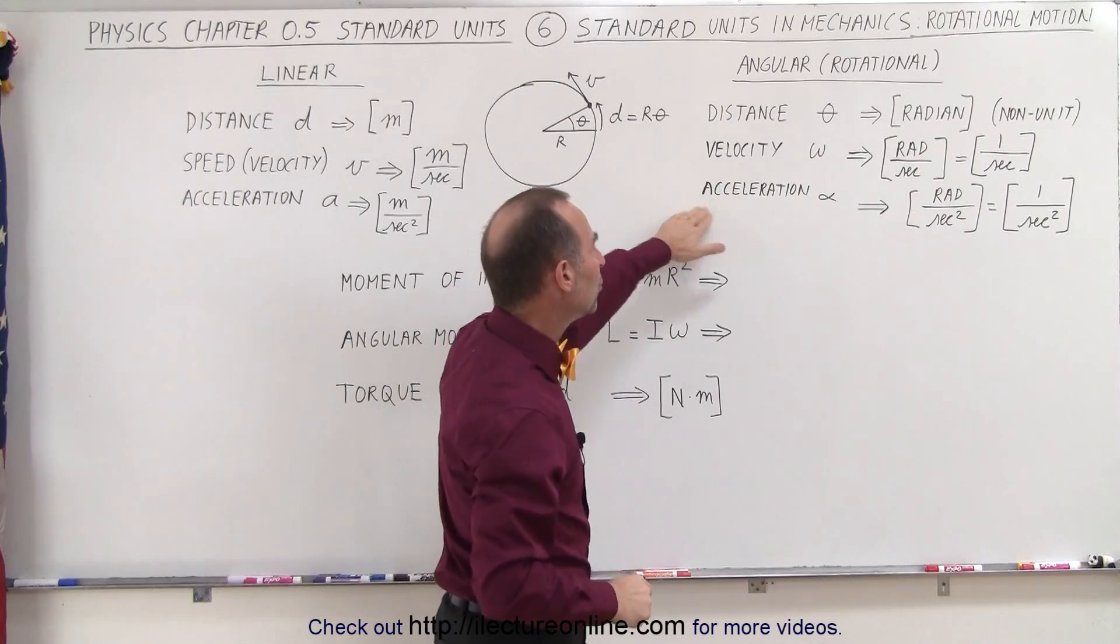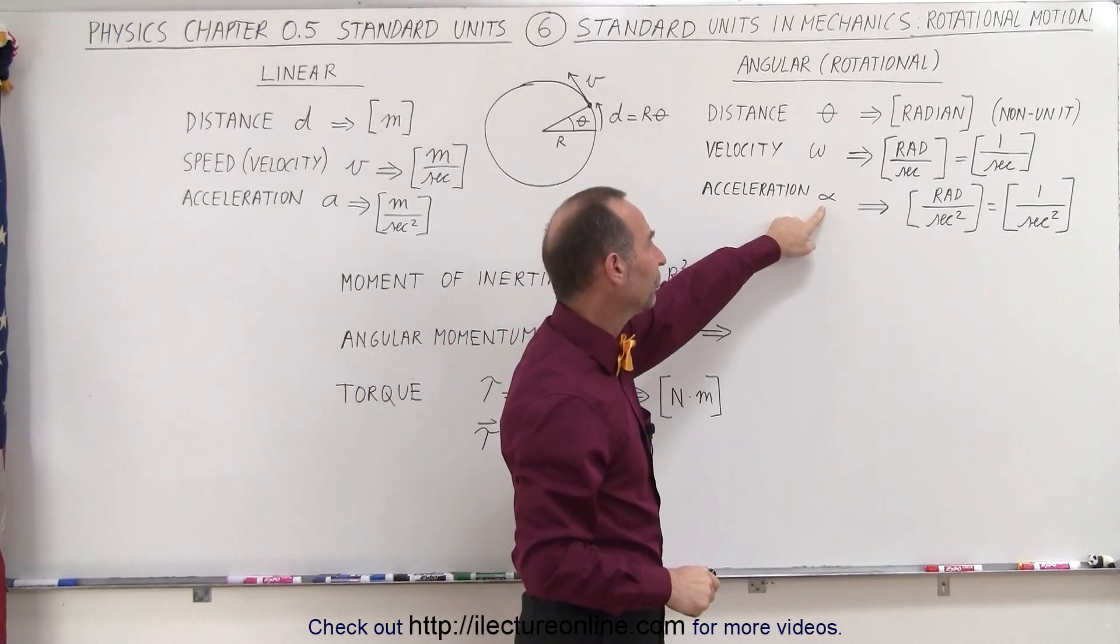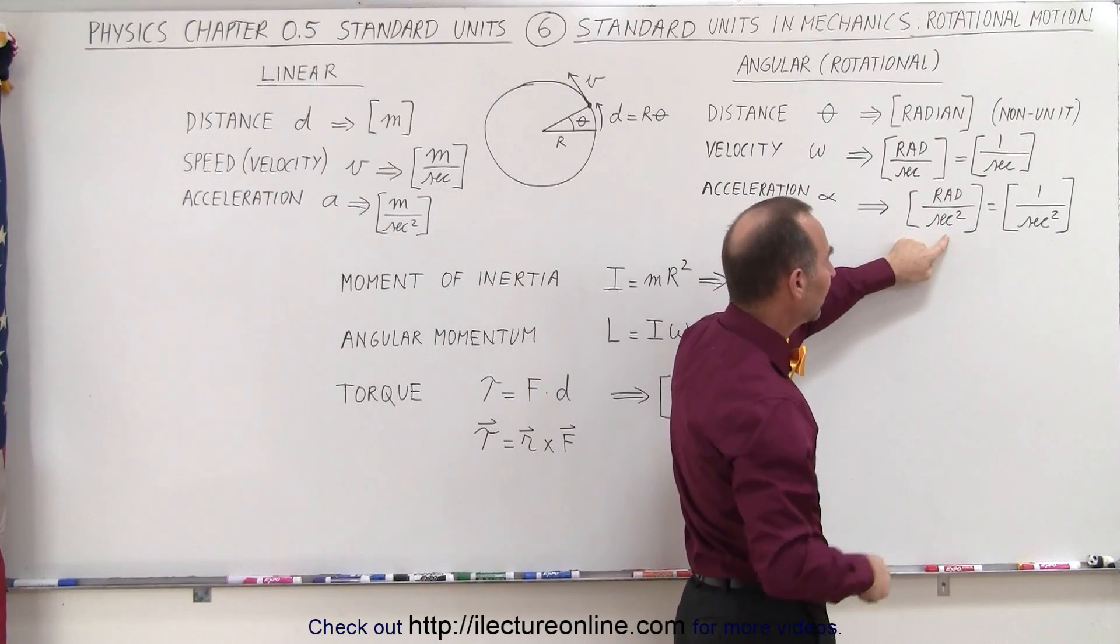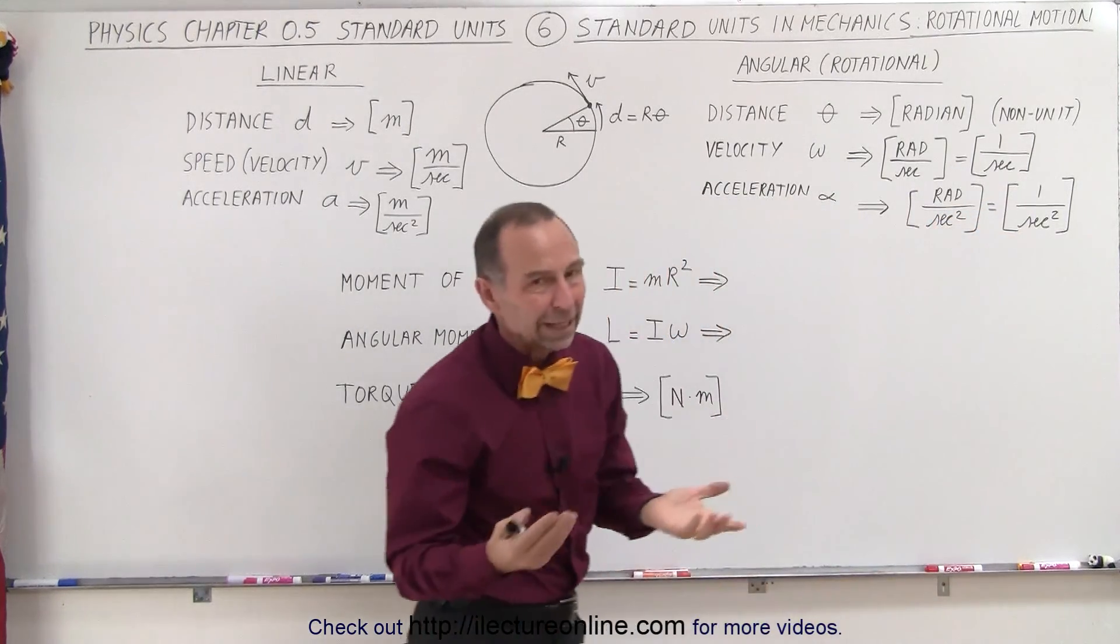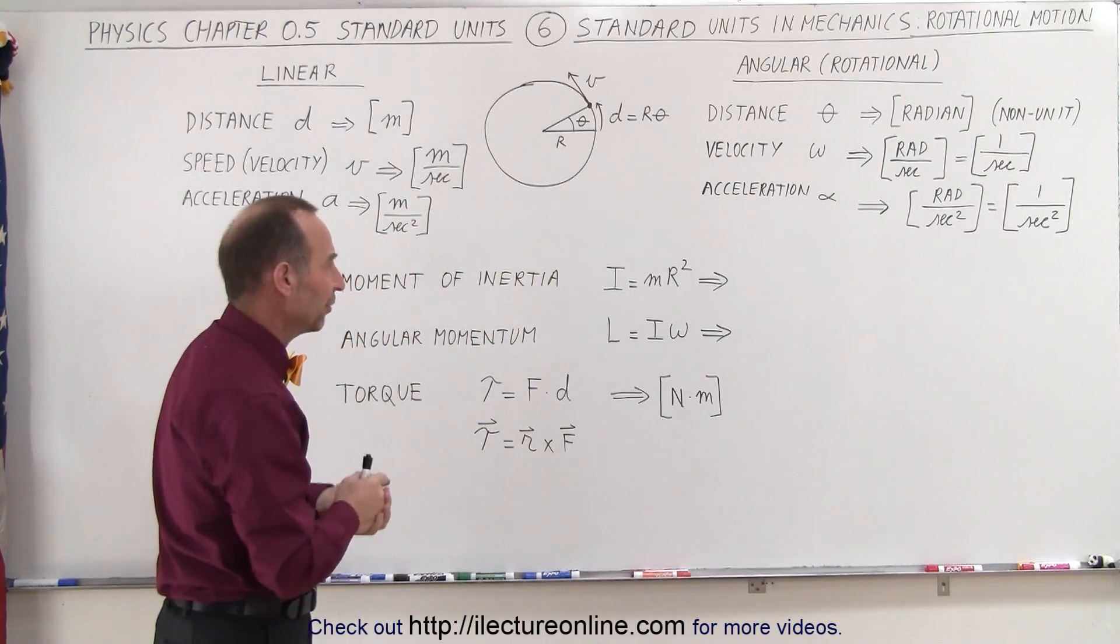Angular acceleration, we use the symbol alpha, the Greek letter alpha, and the units are radians per second squared. Again, that's the same thing as writing 1 over second squared, but putting in the word radian does make sense because it gives you the reference.